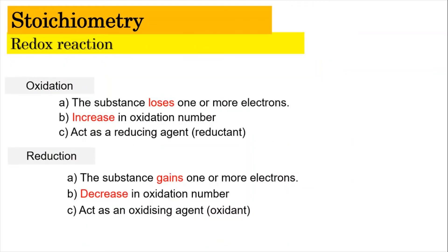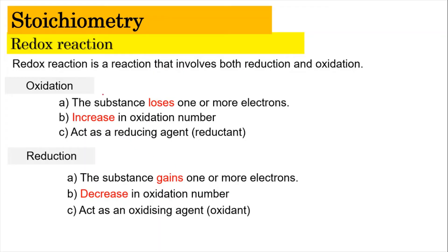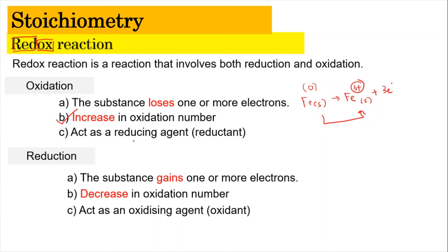Now let's look at redox reactions and how to determine the oxidation number. Redox reactions involve both reduction and oxidation — that's why they are called redox reactions. For oxidation, a species loses one or more electrons. For example, Fe(s) loses 3 electrons to become Fe3+. The electron is removed, and as a result the oxidation number increases from zero to 3+. Because it undergoes oxidation, it acts as a reducing agent.